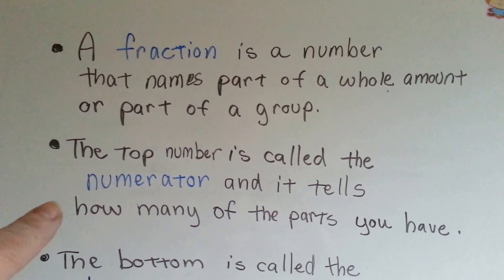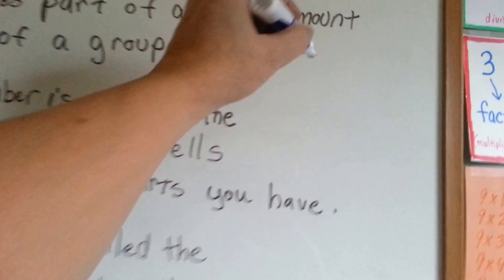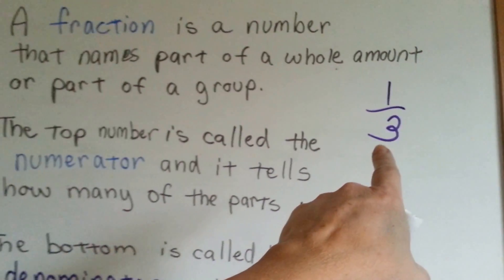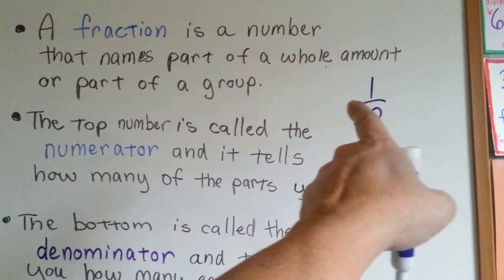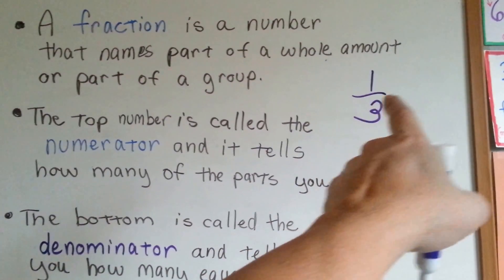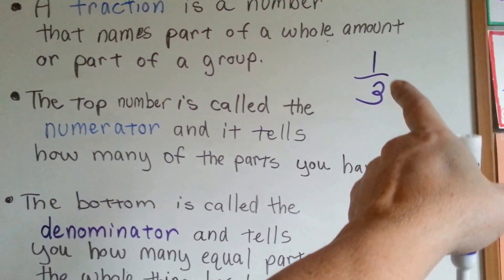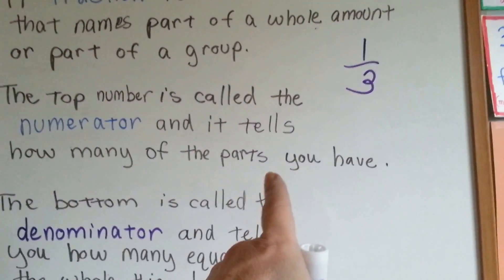The top number is called the numerator. So here's a fraction. That top one is called the numerator. The line is a dividing line, and the numerator tells you how many parts you have.